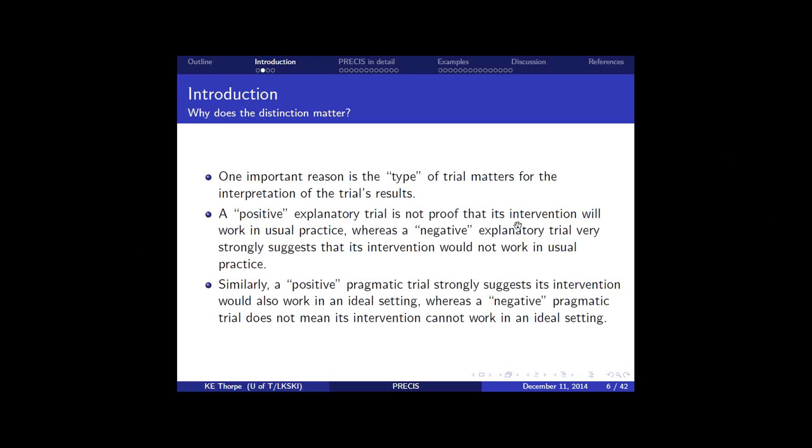So they have to do with patient eligibility criteria, experimental intervention flexibility, practitioner expertise in the experimental arm, comparison intervention, practitioner expertise in the comparison arm, we talk about follow-up intensity, the primary outcome of the trial, participant compliance, practitioner adherence, and the analysis of the primary outcome.